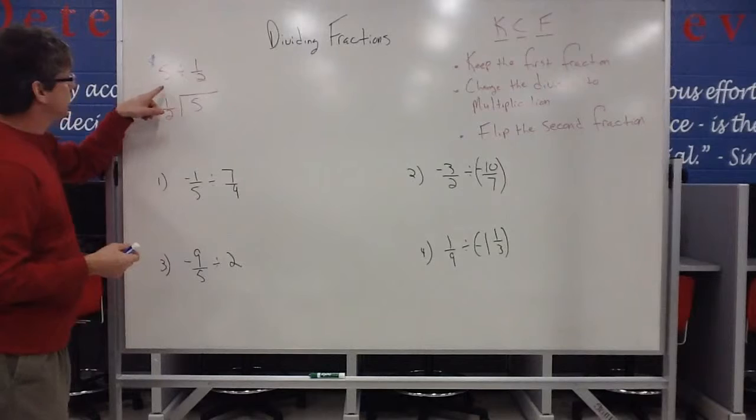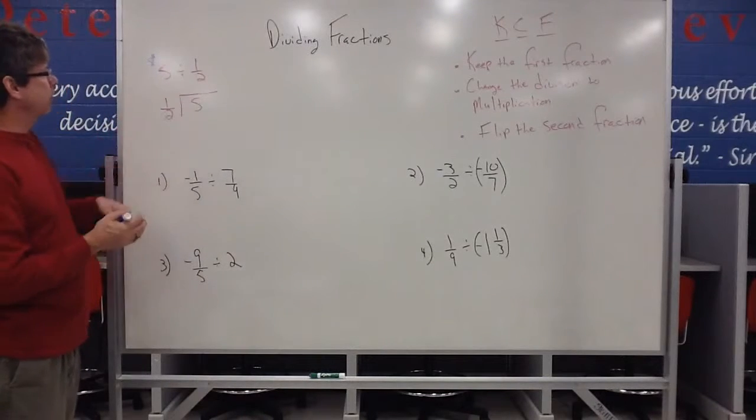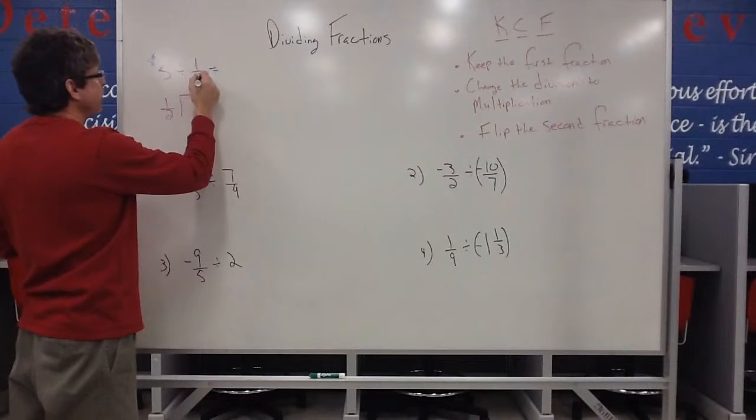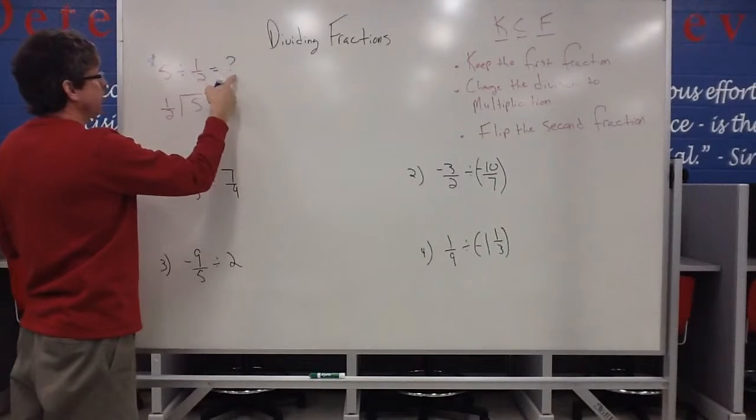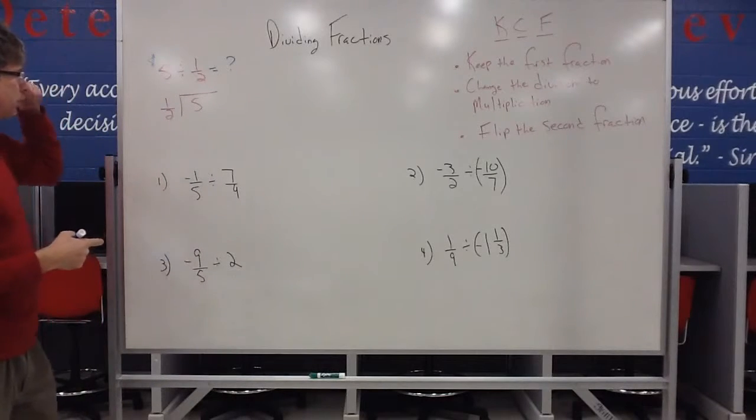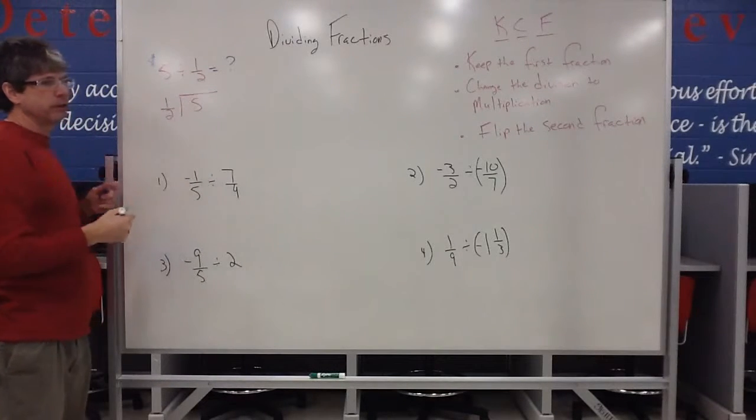Remember, for every division problem, there's also a multiplication problem. So 5 divided by one half is going to be something, which means that something times a half should get back to 5. So what I'm thinking is, how many halves does it take to get to 5?